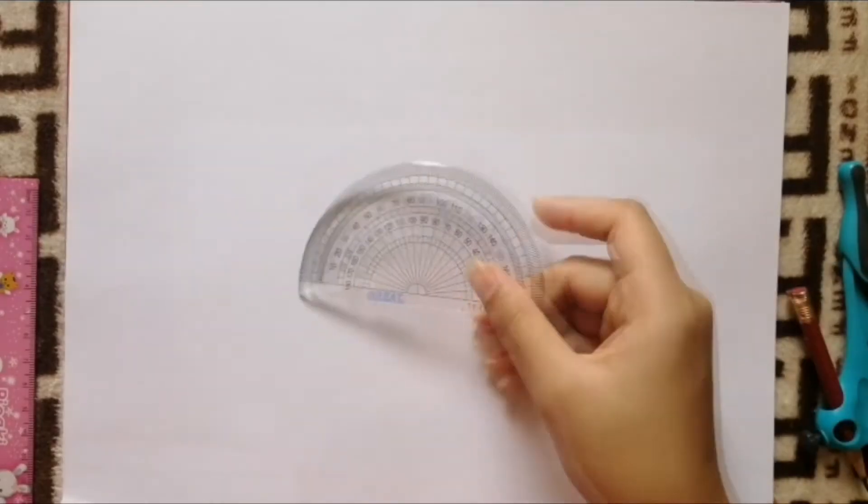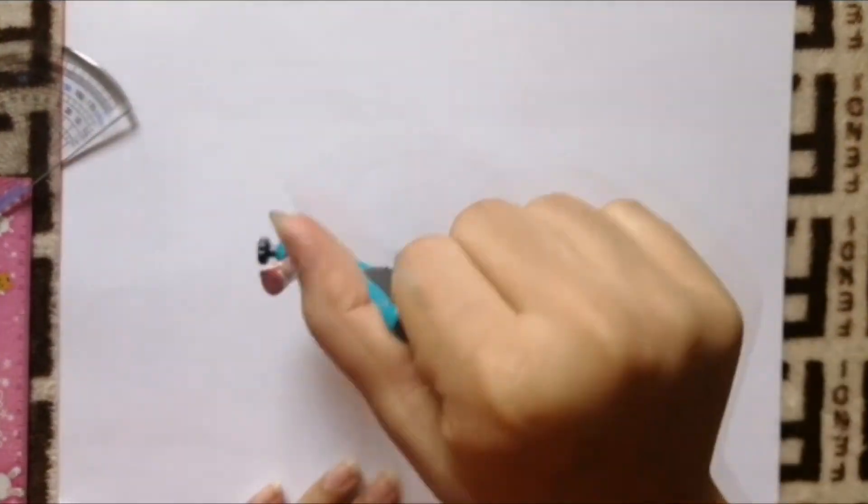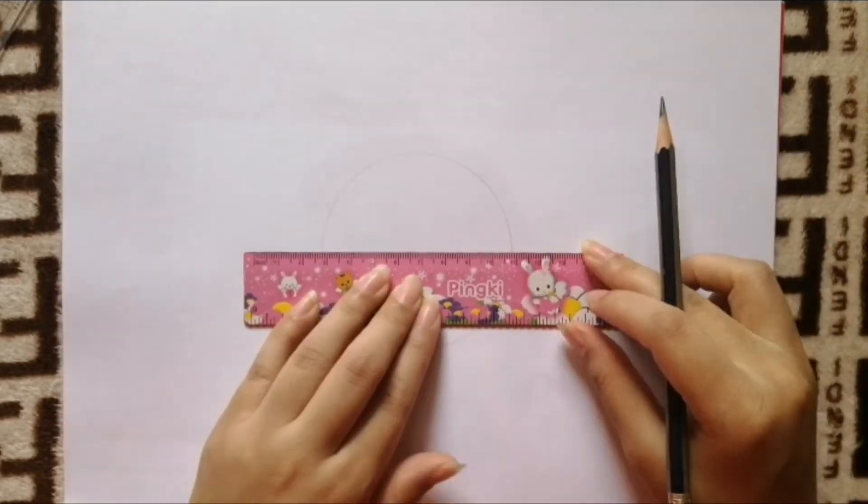The first method is the most common and simple way: using a protractor. All you need to do is first draw a circle using a compass, and then draw a straight line from the center.